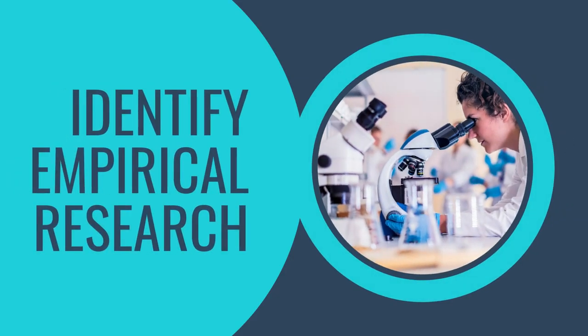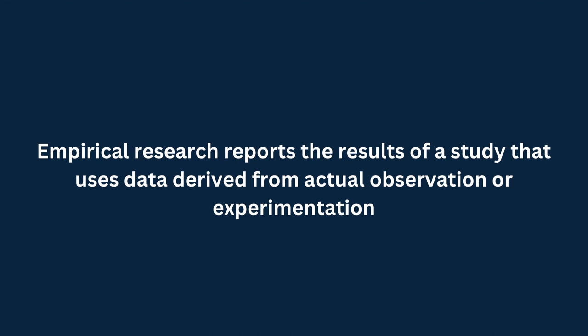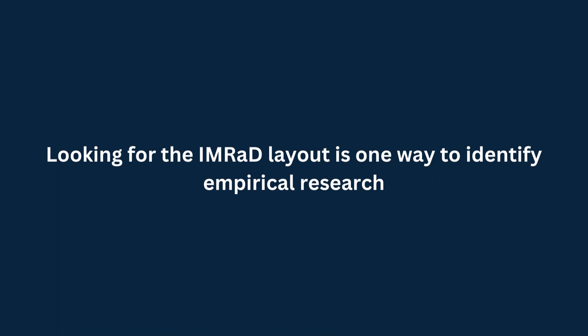In this video, we will discuss how to use IMRAD to help you identify some common elements of empirical research. Empirical research articles are examples of primary research. They report the results of a study that uses data, either qualitative or quantitative, that is derived from actual observation or experimentation. Looking for the IMRAD layout is one way to identify empirical research and distinguish it from other types of scholarly literature.